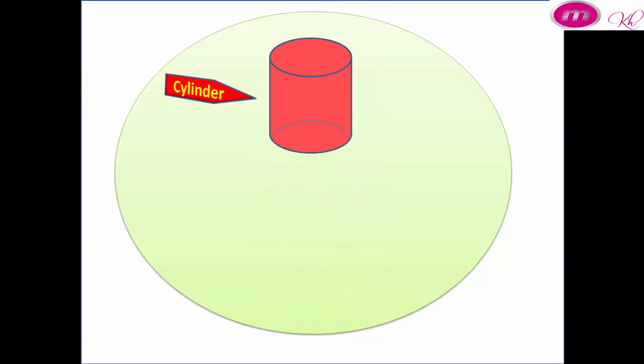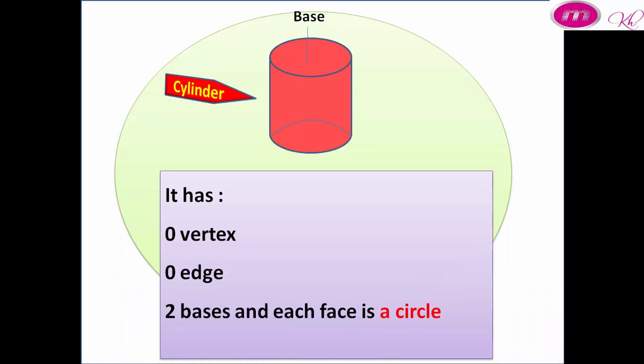Cylinder. A cylinder has 0 vertices, 0 edges, and has 2 bases. Each base is a circle.